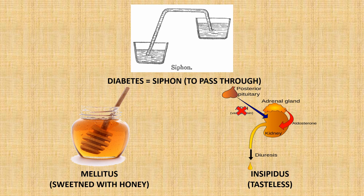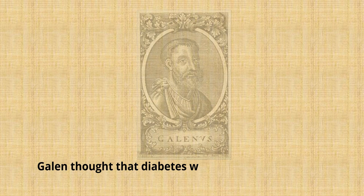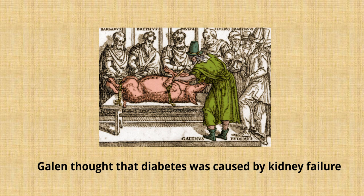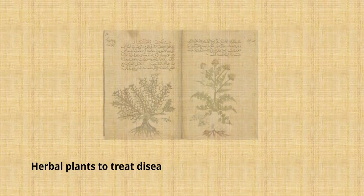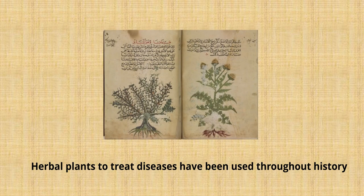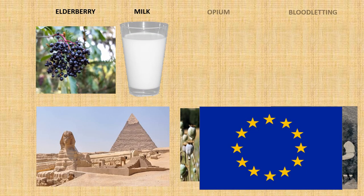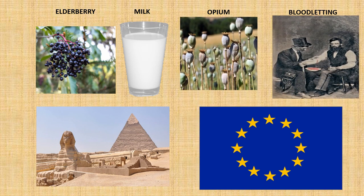Despite the knowledge that doctors from these ancient civilizations had about diabetes, they didn't actually know what caused it and there wasn't much they could do to treat the condition. The ancient Greeks initially incorrectly thought that diabetes was caused by kidney issues, as they saw the kidney was responsible for filtering urine based on animal dissections performed by physicians like Galen. In terms of treatments, there have been hundreds of various herbs and food mixtures suggested by past physicians, including elderberry or milk by the Egyptians and things like opium and bloodletting in Europe.